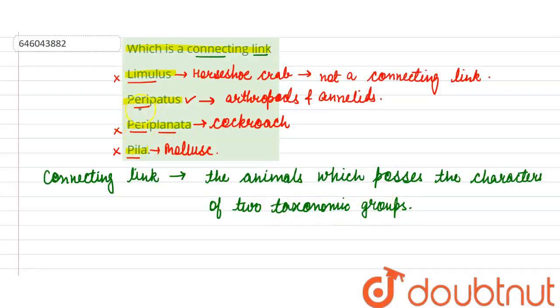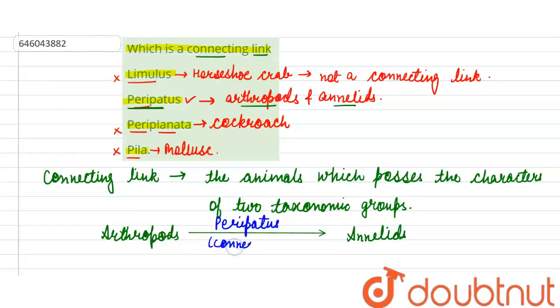For example, if we talk about Peripatus, it has the characteristics of both arthropods and annelids. So we can write that arthropods and annelids have a connecting link which is known as Peripatus.